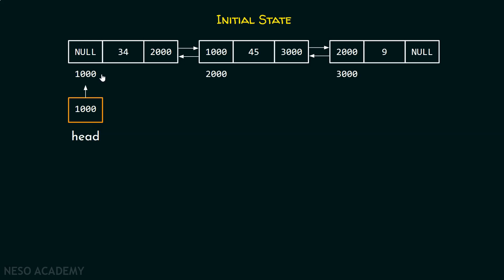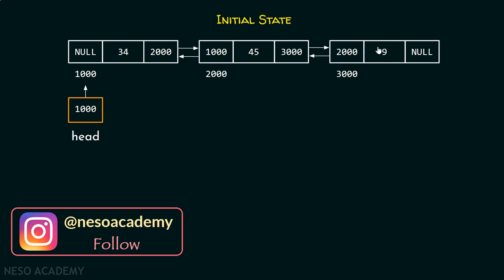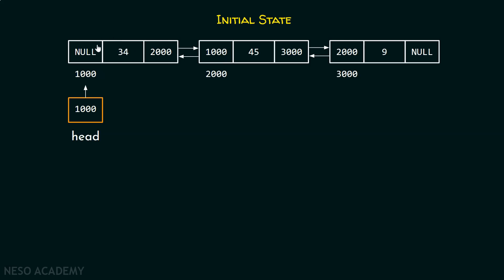Now we want to reverse this complete list so that this node becomes the first node of this list, this becomes the second node, and this becomes the third node or the last node of this list. For this purpose, we will update the links of these nodes.